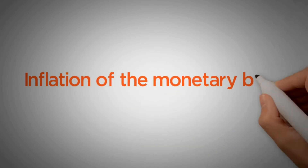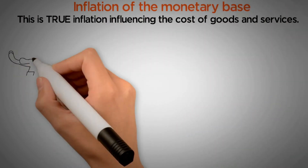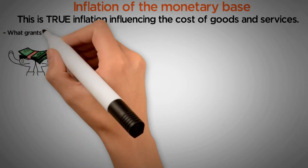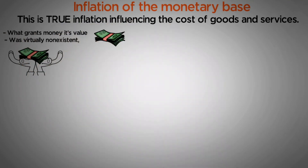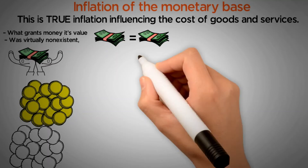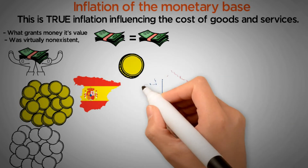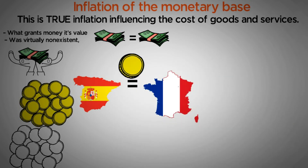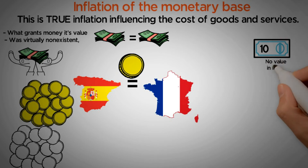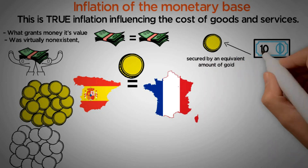Now, the last and most important one: inflation of the monetary base. This is true inflation influencing the cost of goods and services. Originally, the problem of money support — what grants money its value — was virtually nonexistent because it was worth its own composition. Coins made of precious metals such as gold or silver whose exchange value was the same as their intrinsic value. My quarter ounce of gold is worth about the same as yours, even though yours is Spanish and mine is French. However, this system ended when government introduced the gold standard — a system by which the currency in circulation had no value in itself but was secured by an equivalent amount of gold. This was known as commodity currency.